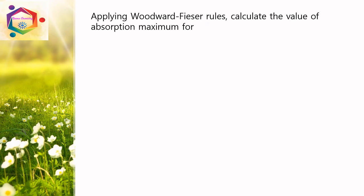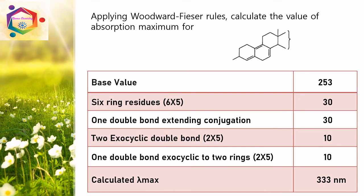Applying Woodward-Fisher rules, calculate the value of absorption maximum for this compound. This is a homoannular diene, so base value is 253. Ring residues: 1, 2, 3, 4, 5, 6 — so 6 × 5 = 30. One extended double bond conjugation adds 30. Two exocyclic double bonds: 2 × 5 = 10. One double bond exocyclic to two rings adds another 10. Total calculated lambda max is 333 nm.